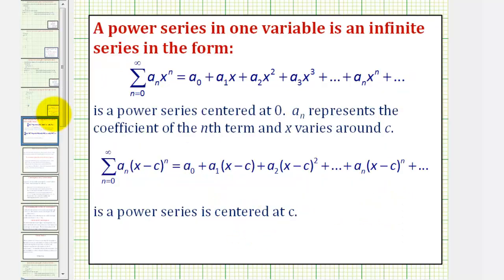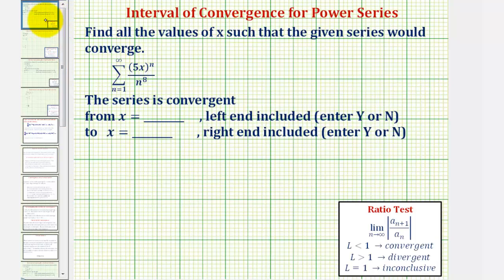We have a power series in this form here — it's centered at zero. If we have a power series in this other form, it's centered at c. The power series will always converge at its center. So for our example, since we have just x, it's centered at zero. Now we'll apply the ratio test to determine the open interval of convergence.